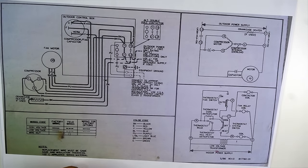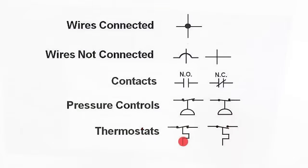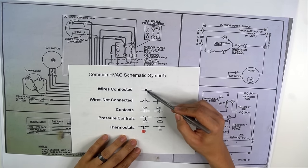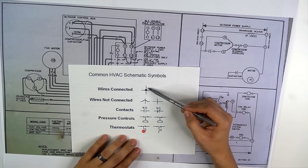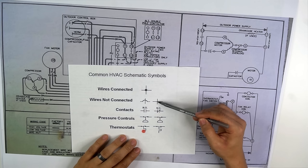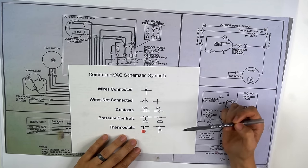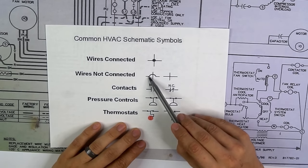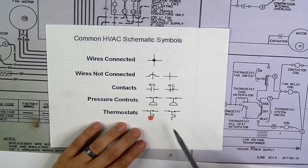Before looking at the wiring diagram, let's go over some common HVAC schematic symbols. Wires that are connected are usually signified by a dot — if lines intersect and there's a dot in the middle, that means there's a connection point, either at the same terminal or via a wire nut. Wires that are not connected typically have nothing in the middle, and on some diagrams one wire will actually jump over the other in a loop.